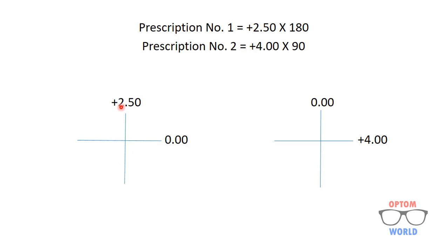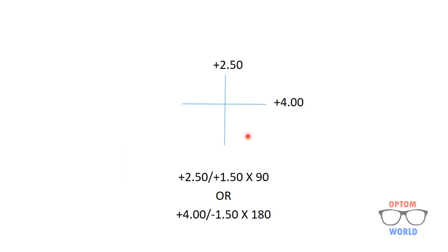Adding the optical crosses: plus two point five zero plus zero gives plus two point five zero, and zero plus four gives plus four. So the net optical cross will be plus two point five zero at 90 degrees and plus four at 180 degrees.